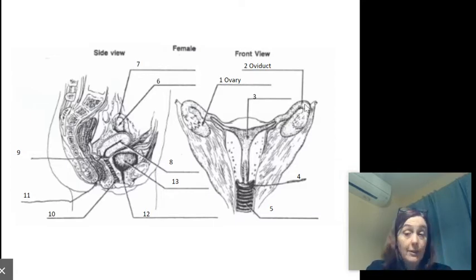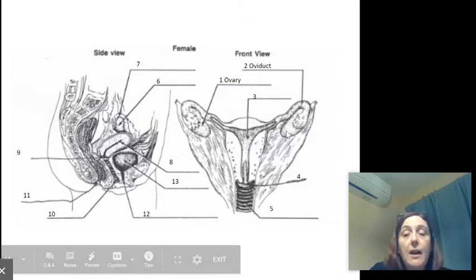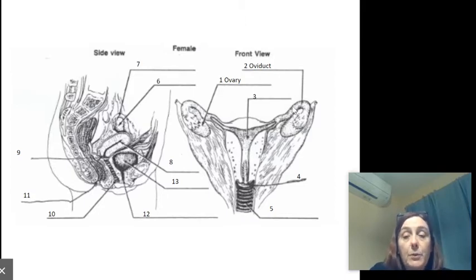Regents question alert! The regents loves to test this and for some reason lots of students get this wrong, so pay really close attention. It is in the oviduct that the sperm and the egg fuse. It does not happen in the uterus, it does not happen in the ovary, it doesn't happen in the vagina. Fertilization, the fusion of sperm and egg, happens in the oviduct.